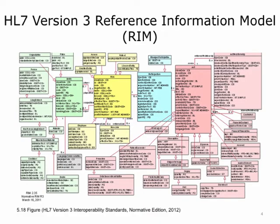This is a picture of the HL7 version 3 Reference Information Model. Each box represents a class and contains attributes. The lines between classes signify their relationship to each other. The premise of the RIM is that the universe of healthcare is divided into acts and roles. For example, an encounter is an act, an order is an act, and a medication administration is an act. People or entities play roles that relate to the act — for example, doctors order orders, patients are admitted to a hospital encounter, and nurses administer medications.